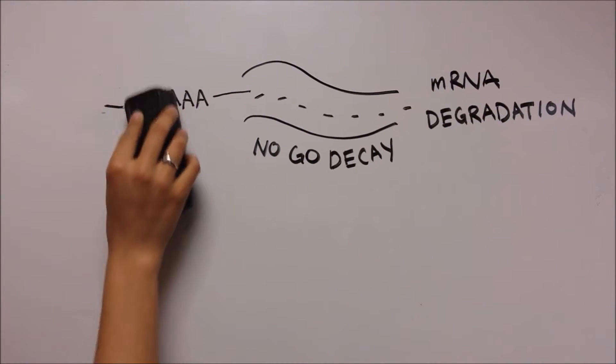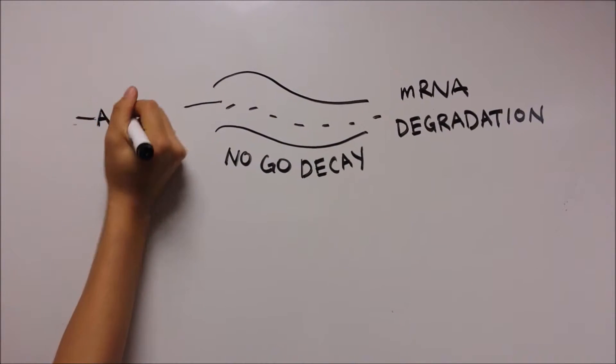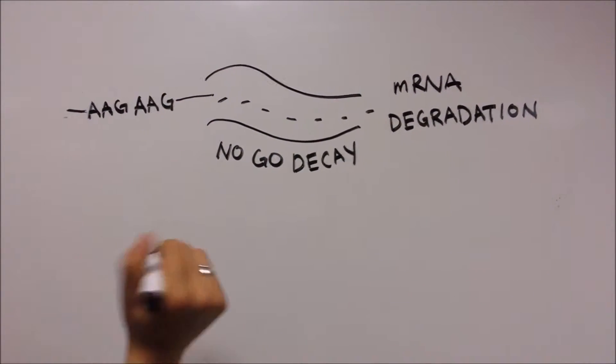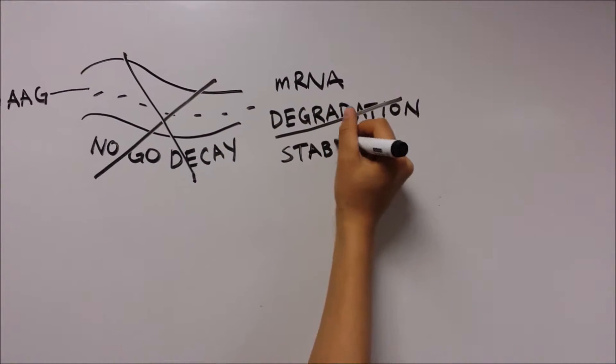However, when non-poly-A codons encoding other polylysine and polyarginine were employed, the mRNAs were stable, suggesting that no-go decay was not the operative pathway.